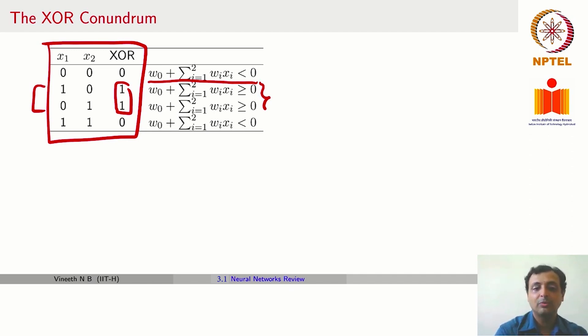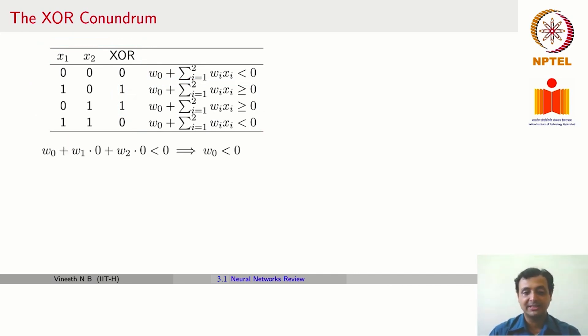Similarly, in the next two cases we would want it to be greater than or equal to 0, and in the last case we want it to be less than 0 again. Let us analyze the first equation: W_naught plus W_1 into 0 plus W_2 into 0. We want it to be less than 0, which means W_naught has to be less than 0.